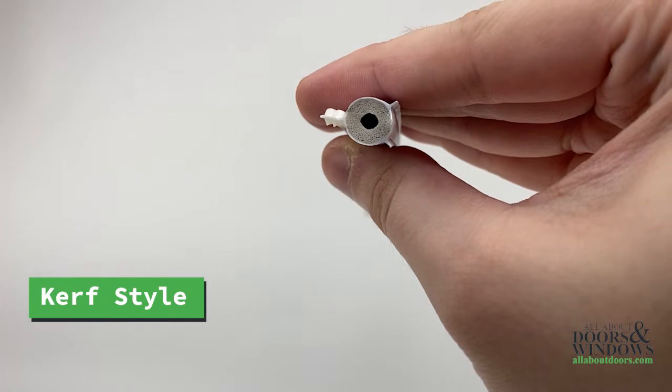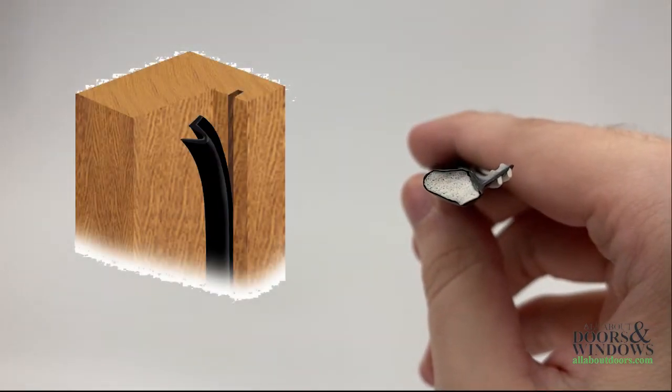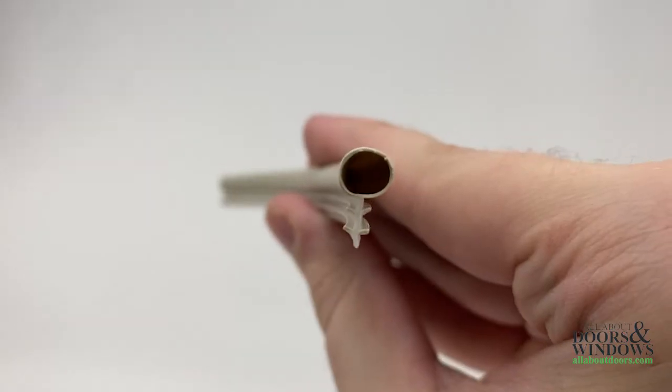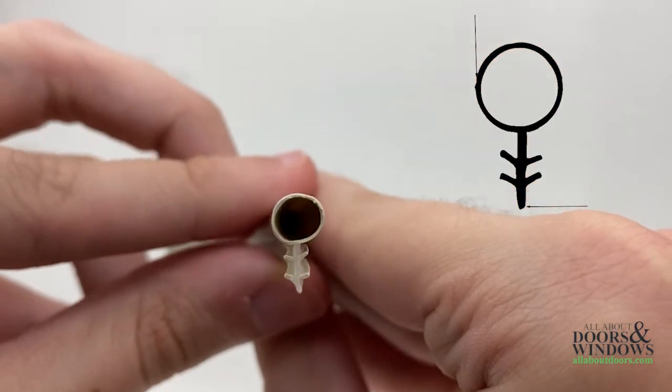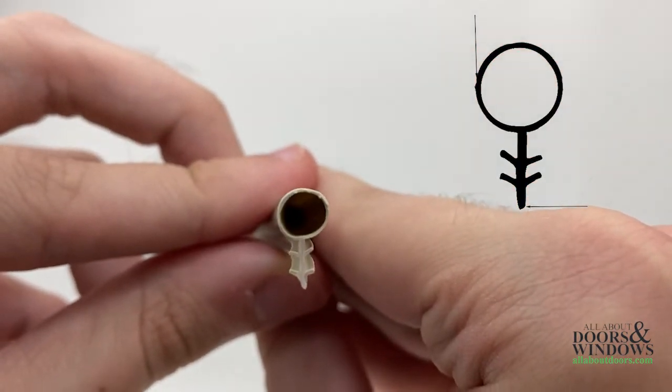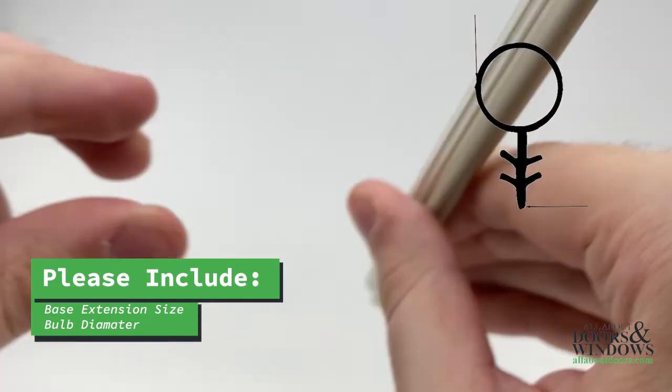First we have kerf style, which means the door jamb has a thin saw cut or kerf that accepts the weatherstripping fin. This fin wedges into the kerf and holds the weatherstrip seal in place by friction, thus eliminating the need for fasteners. When contacting us for replacement options, please include the base's extension size, the bulb's diameter, the backing width, and reach.